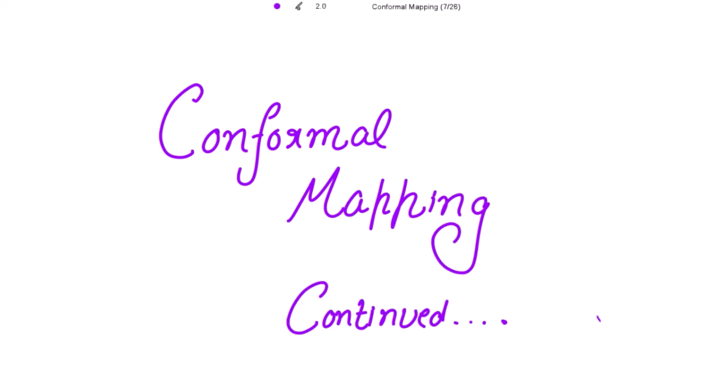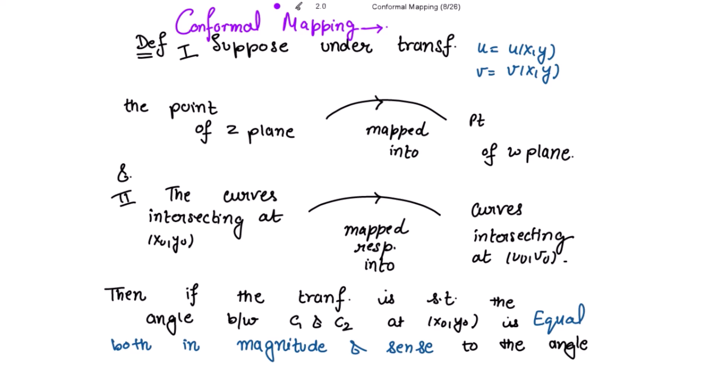Good morning. Conformal mapping continued. The definition is: suppose under the transformation u equal to u(x,y) and v equal to v(x,y), that is u and v depend upon x and y variables. The point x0, y0 of the z-plane is mapped into the point p' that is u0, v0 of the w-plane. The curves c1 and c2 intersecting at point p(x0, y0) are mapped respectively into curves tau1 and tau2 in the w-plane at p'. Then if the transformation is such that the angle between c1 and c2 is equal both in magnitude and sense, whether positive or negative, to the angle between the curves tau1 and tau2, then we say that such mapping is conformal mapping.